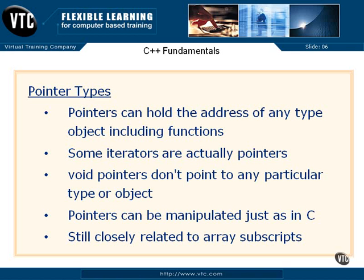Pointers are still very closely related to array subscripts. The address of the zeroth element of an array can be set into a pointer, and now the pointer points at the beginning of the array. If it knows it's an integer pointer and it's an array of integers, when you increment you'll go forward by the number of bytes in an integer and decrement it — just like you did in C.